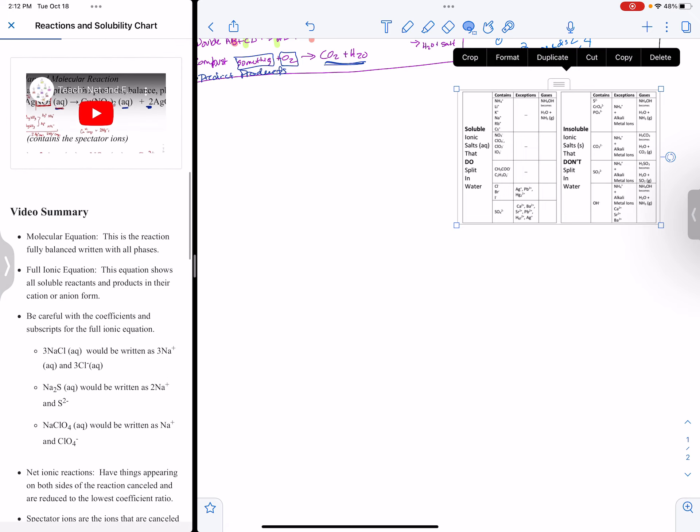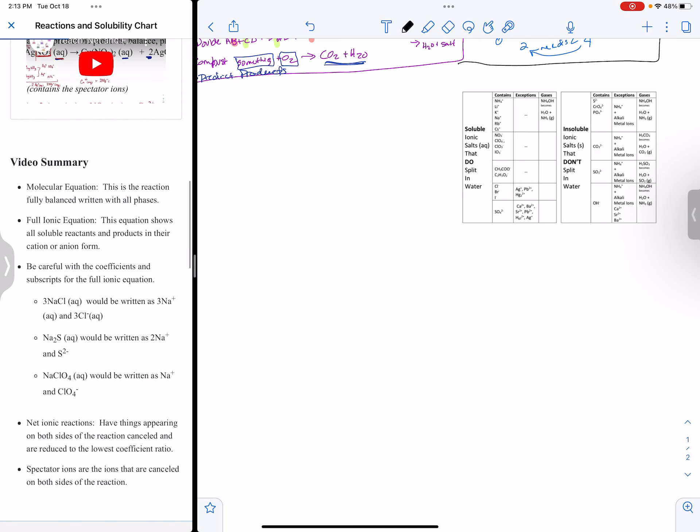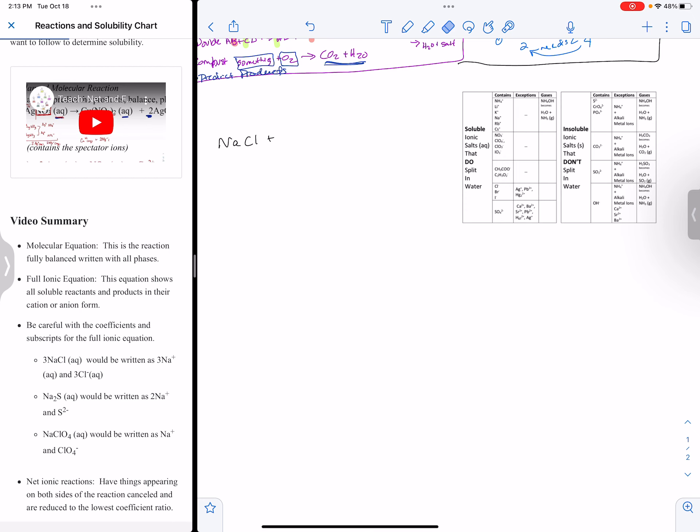I'm going to go to that video summary because that's what's in the video. It says molecular equation, full equation, and net ionic. I would probably have an example reaction. In that picture, AgNO3 plus CuCl2 goes to Cu(NO3)2 plus 2AgCl. That would have been in the video. So if there's an example, maybe just write out the example.